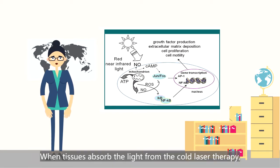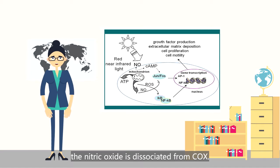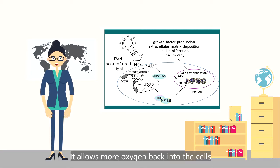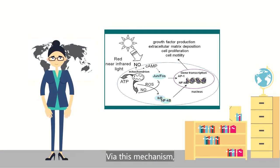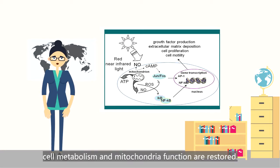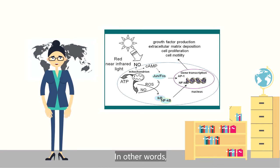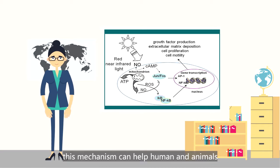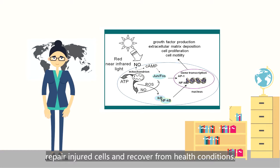When tissues absorb the light from cold laser therapy, the nitric oxide is dissociated from cytochrome C oxidase. This allows more oxygen back into the cells and therefore increases tissue oxygenation. Via this mechanism, cell metabolism and mitochondrial function are restored. In other words, this mechanism can help humans and animals repair injured cells and recover from health conditions.